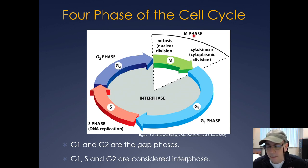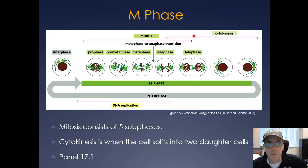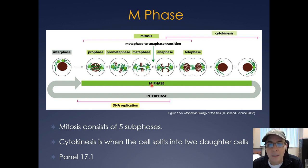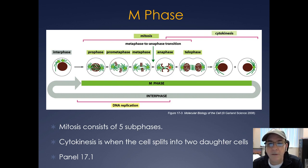During G1, G2, and S phase, that's called interphase. When the cell is actually dividing, it's called M phase. M phase is broken down into a number of different sub-phases: prophase, prometaphase, metaphase, anaphase, telophase, and then cytokinesis.